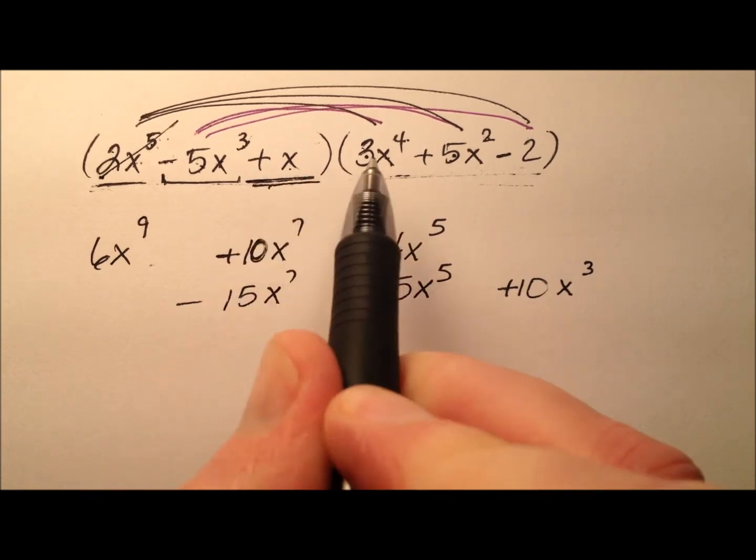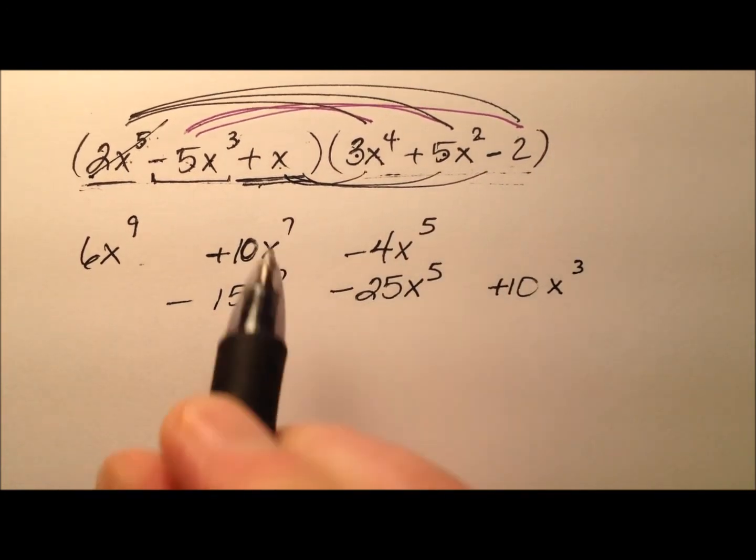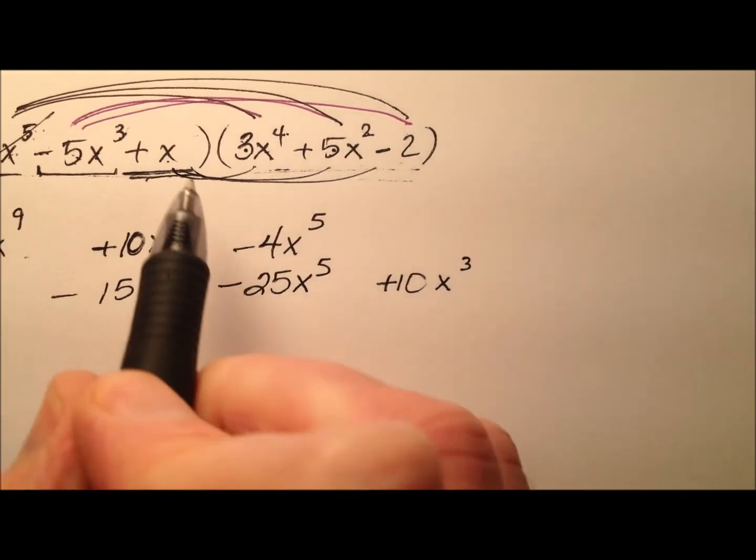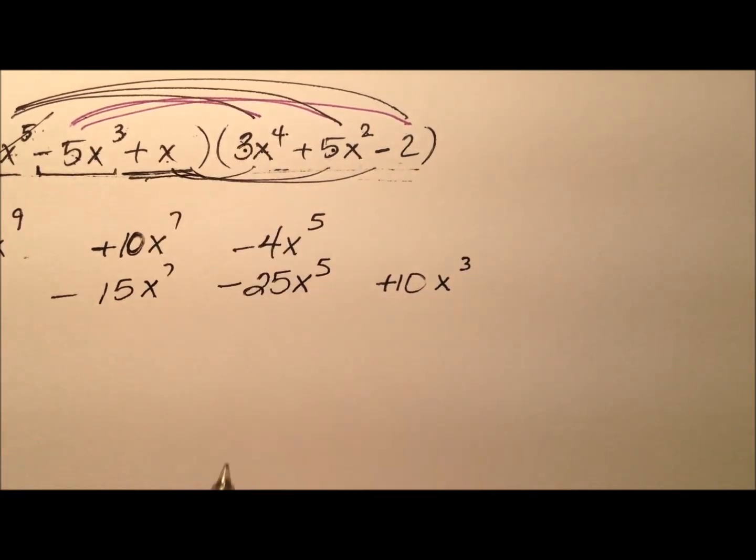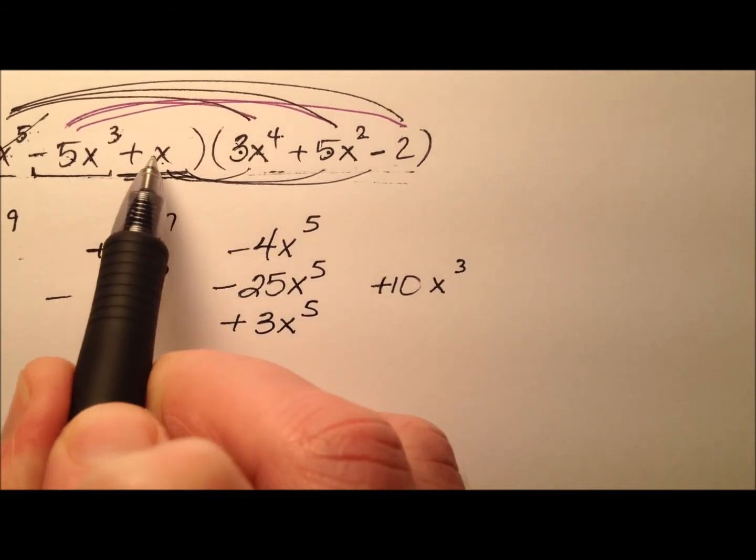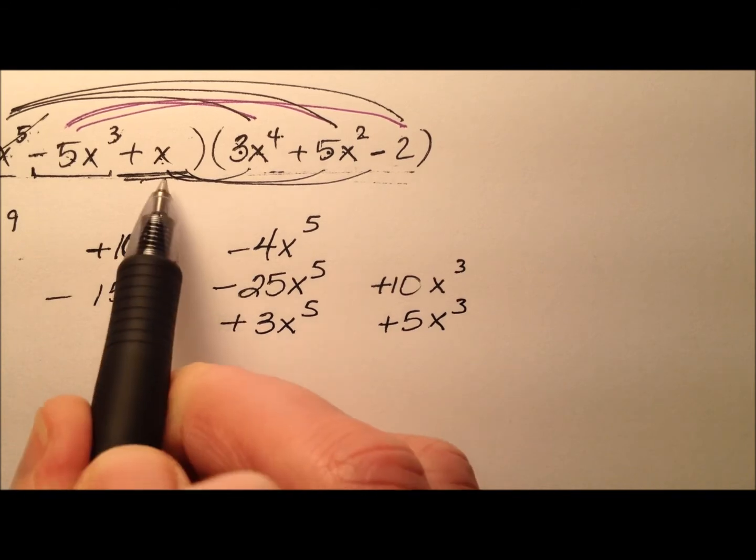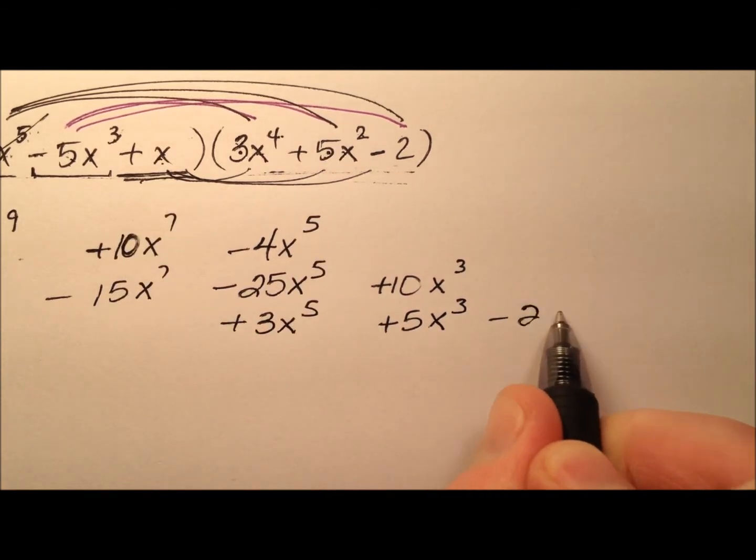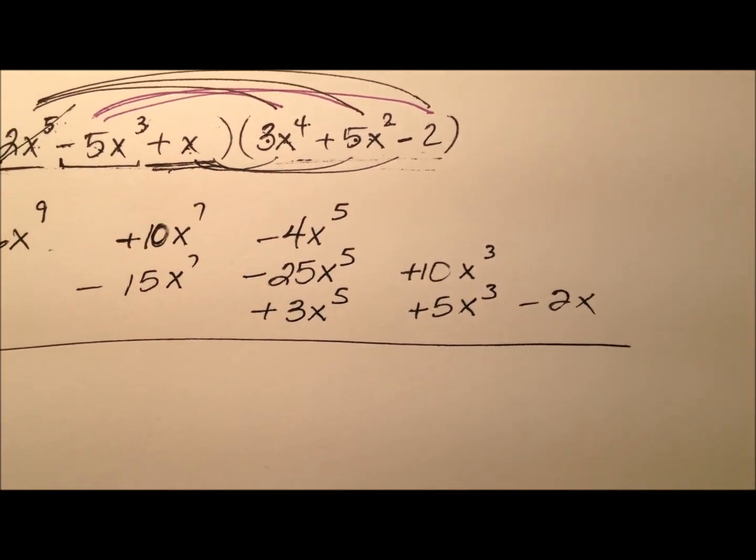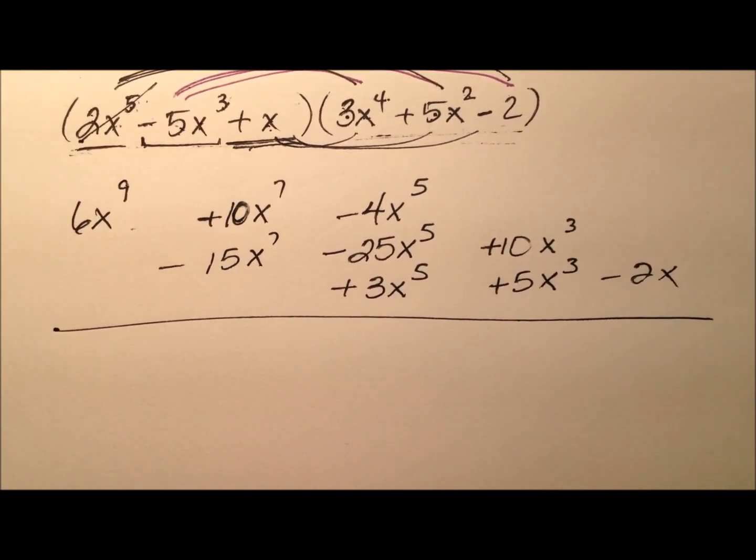So then we have this plus x, and we'll distribute them here, here, and here. So, and we might need to move this piece of paper over a little. So x times 3x to the fourth will be positive 3x to the fifth, and then x times 5x squared will be positive 5x cubed, and then finally, we'll have a negative 2x at the end here. Okay, so let's see if we can get them all in there. Yeah, there we go. Fit them all in there.